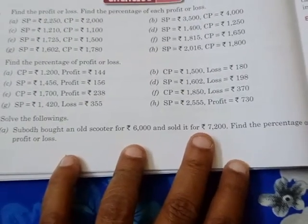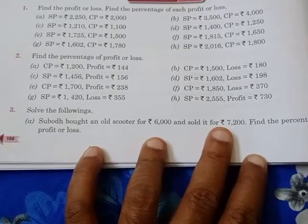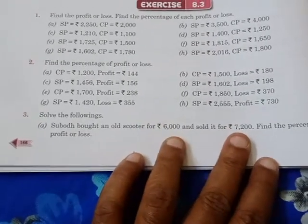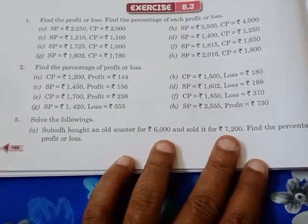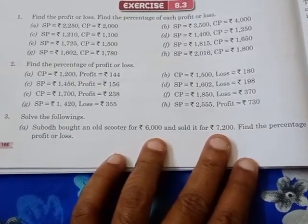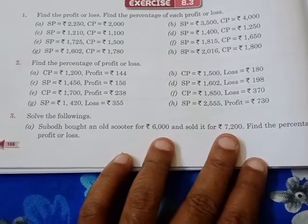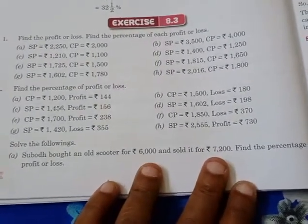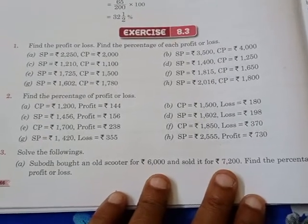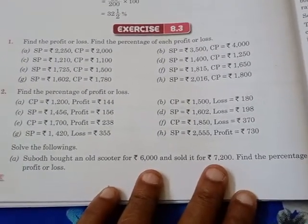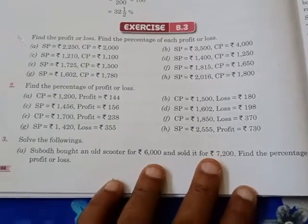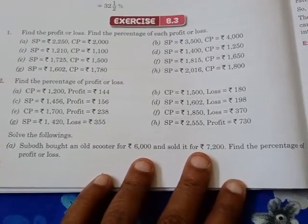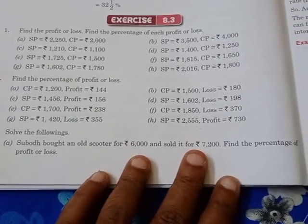To find the profit, we subtract the cost price from the selling price. Then we express it as a fraction: profit goes in the upper portion (numerator) and cost price goes in the lower portion (denominator). Then we multiply with 100 to get the percentage of profit.